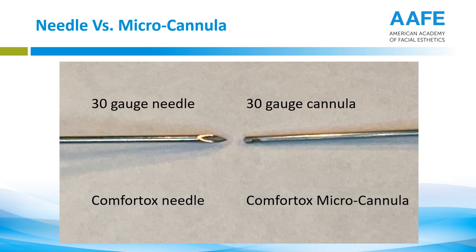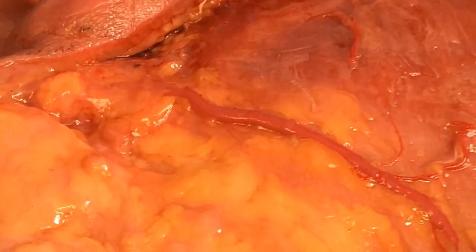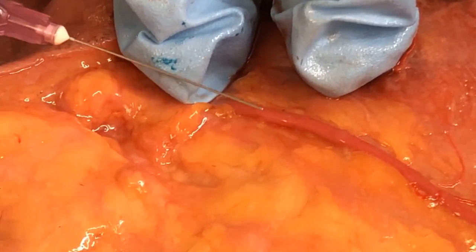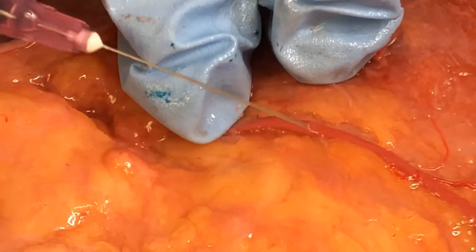But that's not good enough for us at the AAFE. We routinely do our own cadaver labs and research. Here comes a cadaver dissection from one of the AAFE cadaver labs where we also tested this theory. Realize that it's hard to pierce a vessel with a Comfort Tox micro cannula even when you can see what you're doing — so imagine how much tougher it is when you can't see, which is normal in a living human being. Cadaver dissection coming — get anyone out of the room who shouldn't see this.